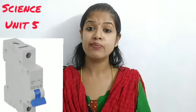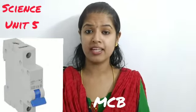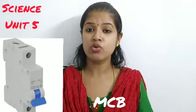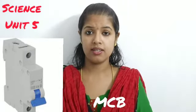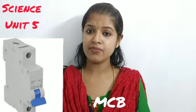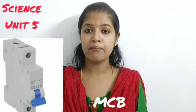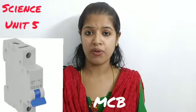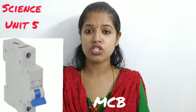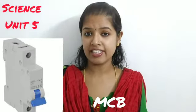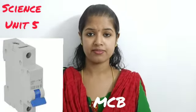Next, you can see a picture of the MCB — that is, the Miniature Circuit Breaker. Nowadays we use this in homes. It also functions as a safety fuse — when excess current flows, it makes the circuit open, stopping the current flow and protecting us from overloading.